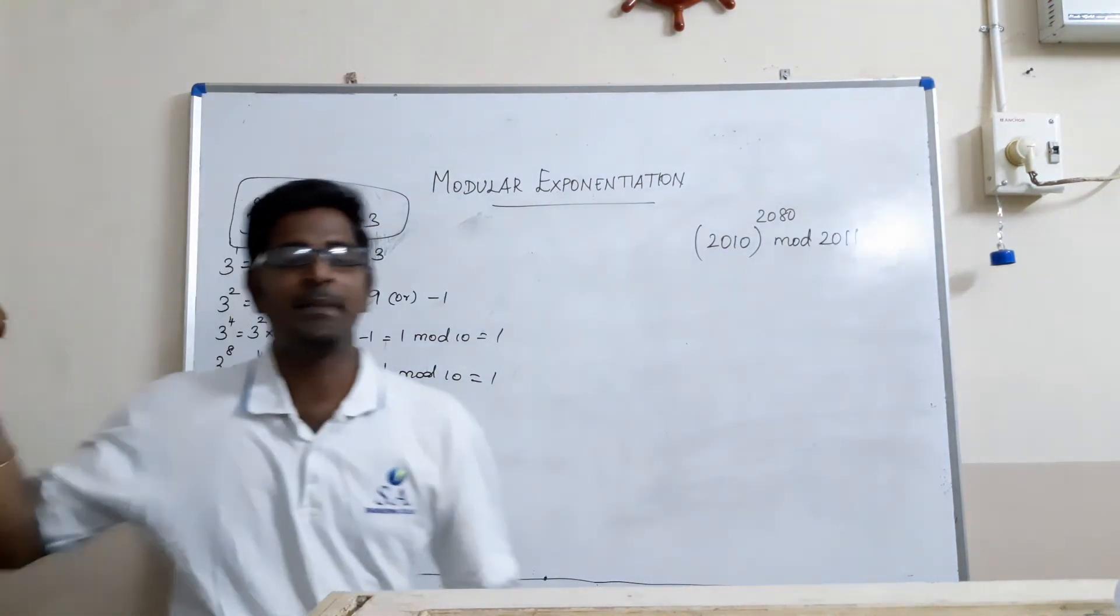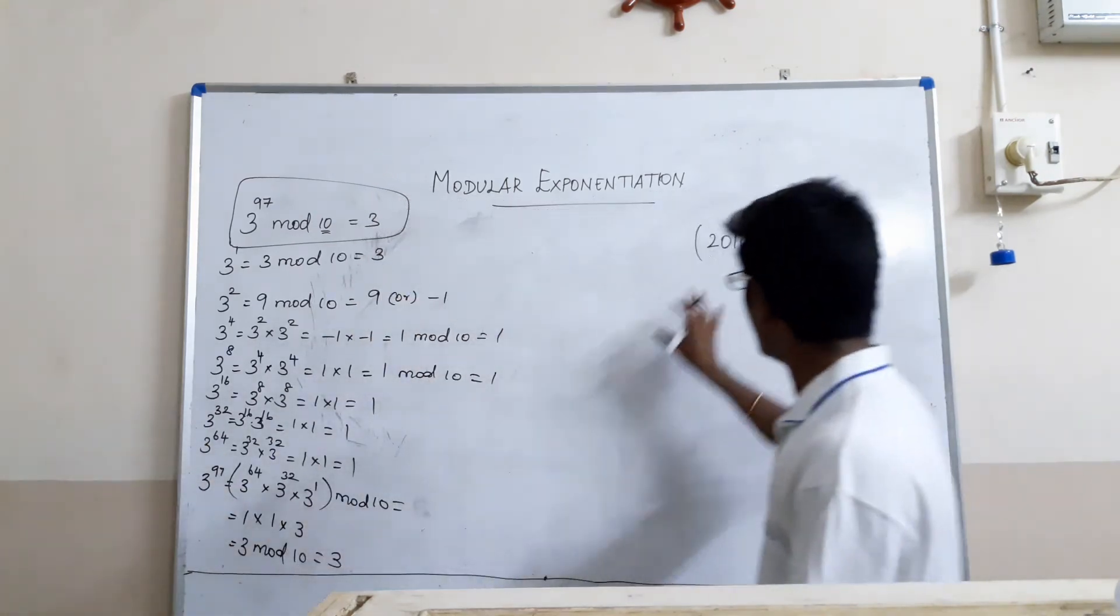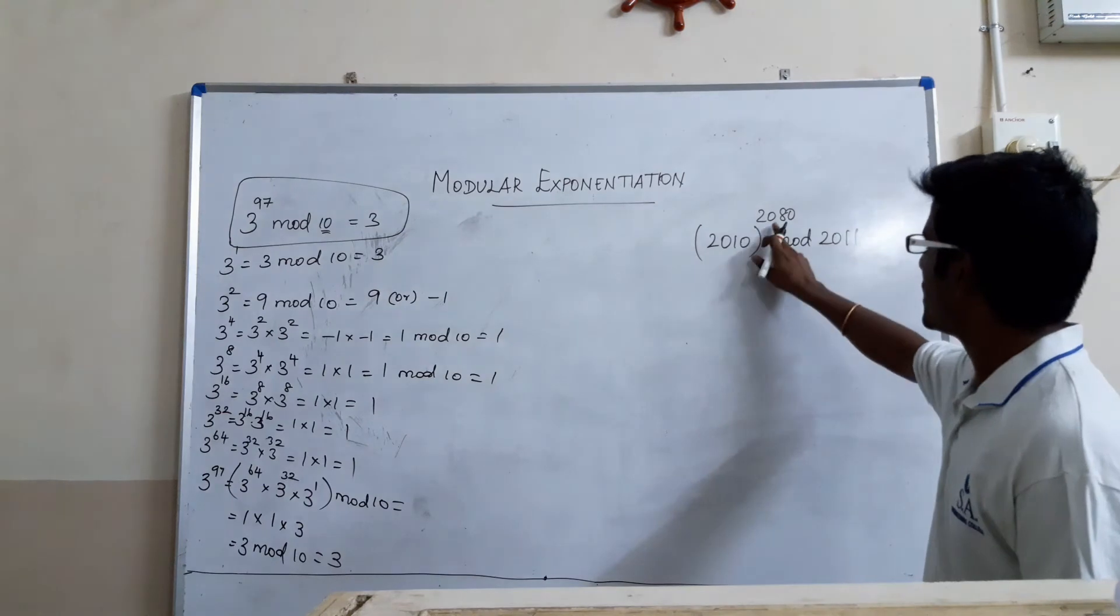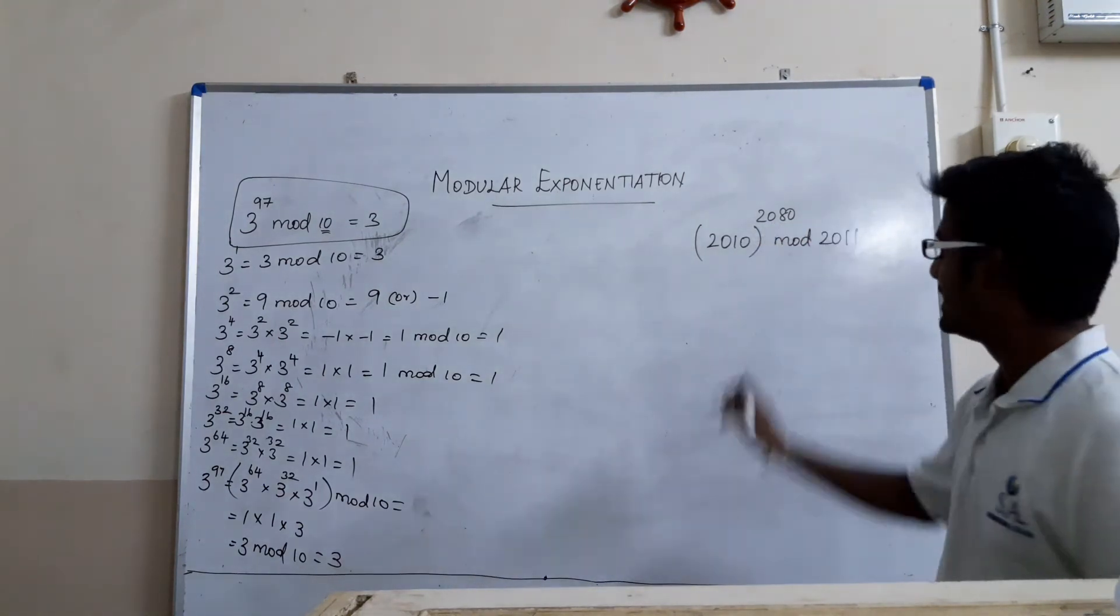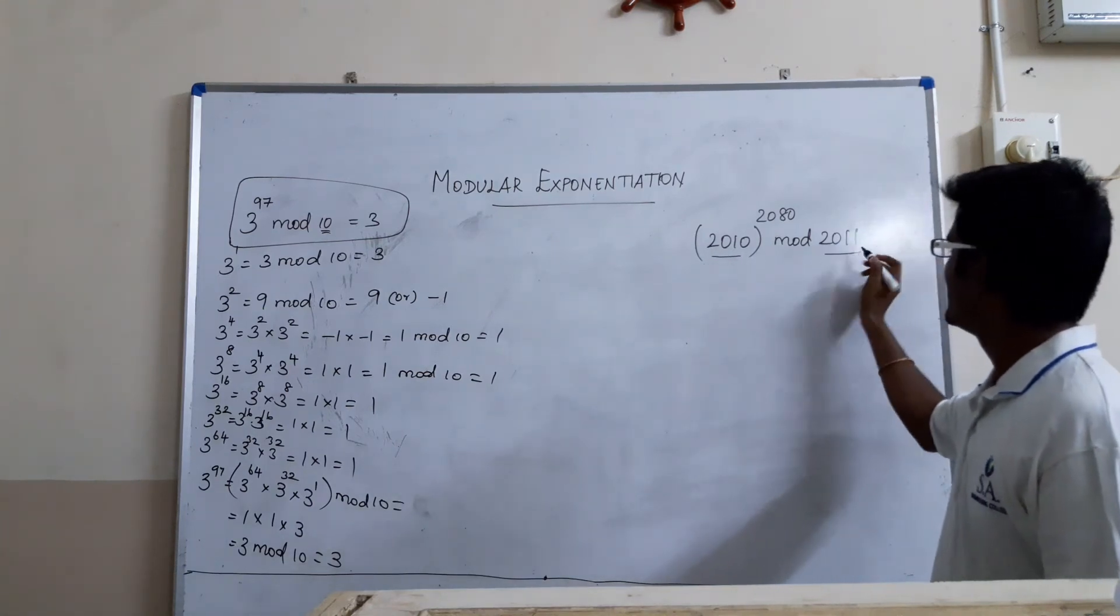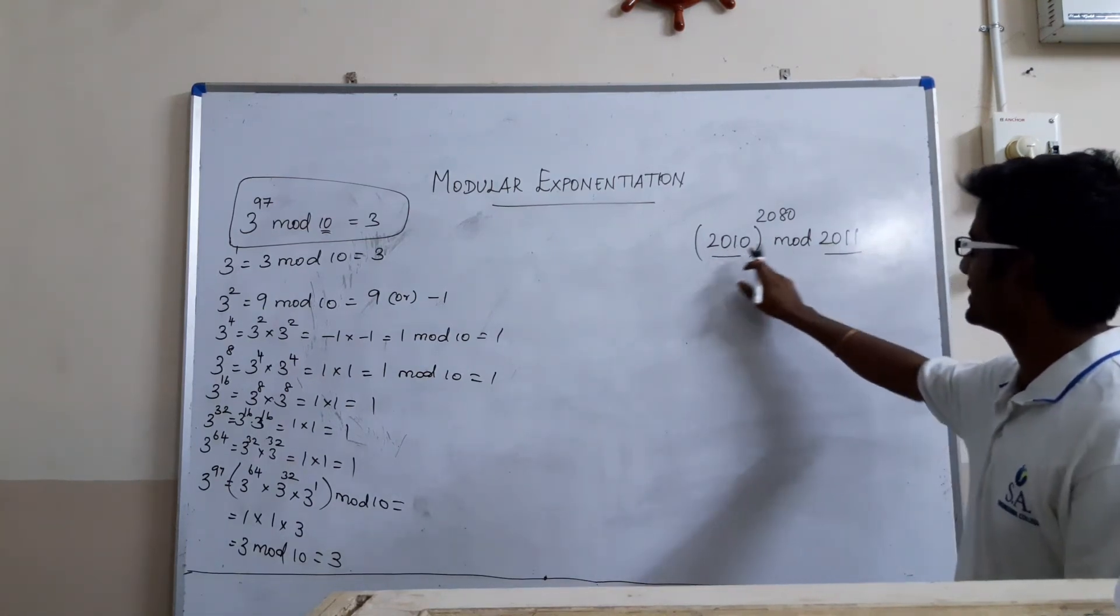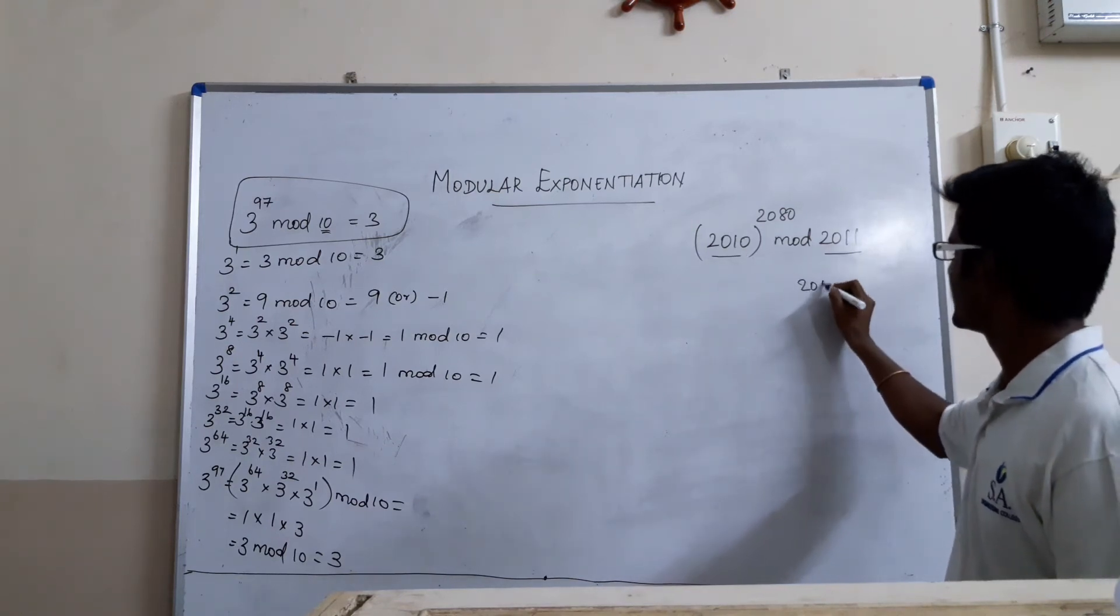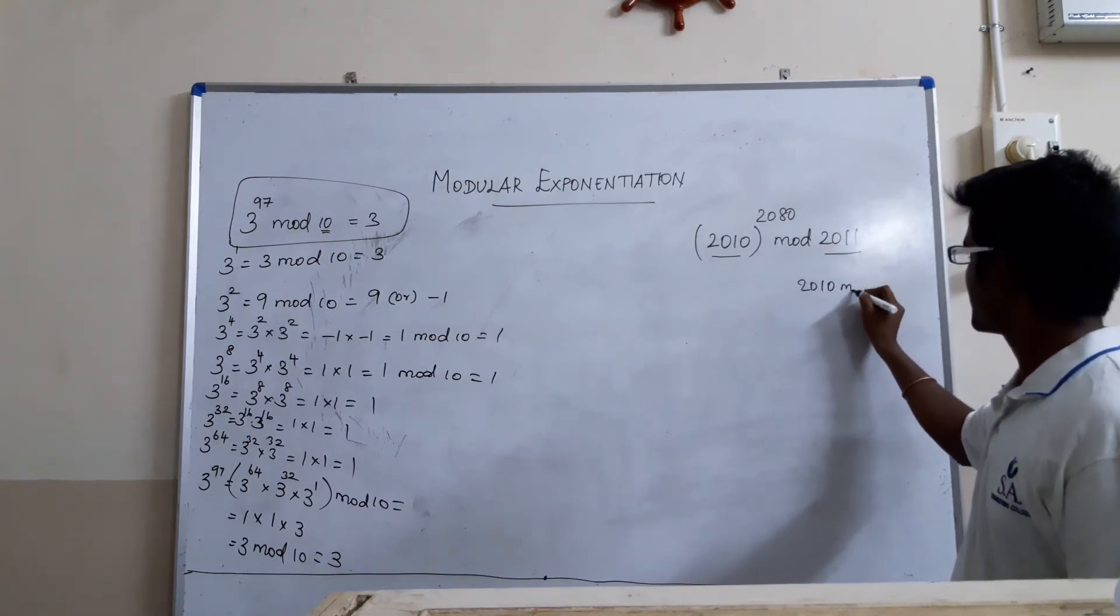So, without calculator I am able to solve this. Now, we will take one more easier example. Just see 2 power 10 mod 2080. So it need not to be solved like this. Just compare this and this. So, how many times this number is sorted? For example, 2010 mod 2000 mod 2011.